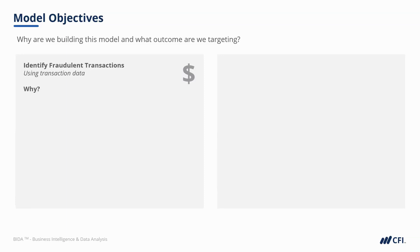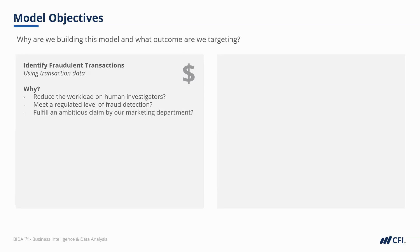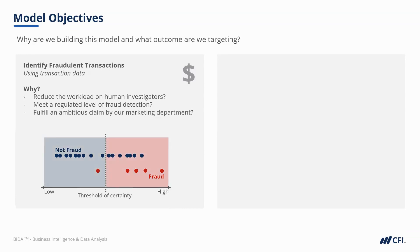But we should ask ourselves why. Are we trying to reduce the workload on our human investigators? Are we trying to meet a regulated level of fraud detection? Or are we trying to fulfill an ambitious claim by our marketing team about the robustness of our fraud detection? All of these might affect at what level of certainty we classify a transaction as fraud. By setting the threshold too low, we'll likely catch most of the fraud, but we risk having a lot of false alarms that create unnecessary work for the team.